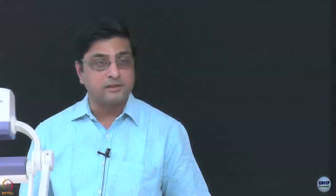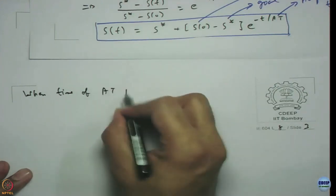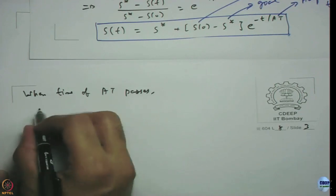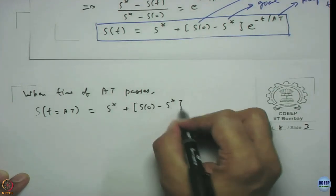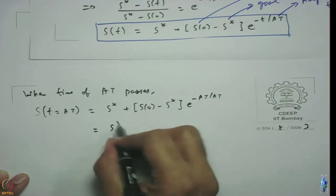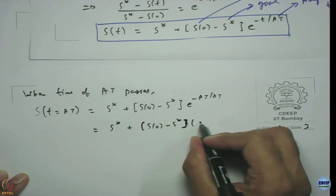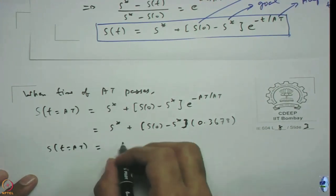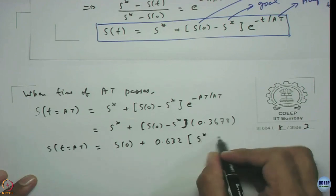One thing we saw was when adjustment time AT passes, what happens? s(t = AT) = s* + [s(0) - s*]e^(-1) = s* + [s(0) - s*](0.3678), which gives s(0) + 0.632(s* - s(0)).